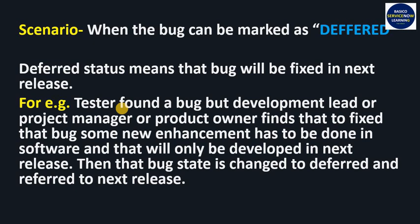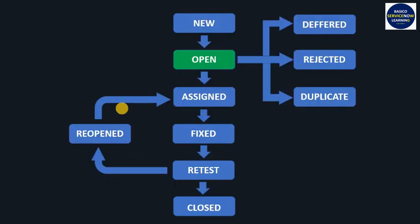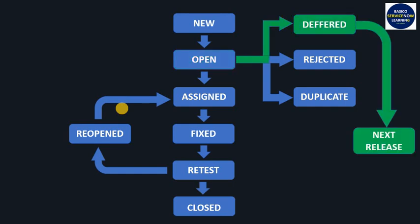Let's understand this in the bug lifecycle. If a particular bug is logged by the software tester and it is in the Open state, then the development lead, product owner, or project manager will analyze it. If they find this bug will not be fixed in this release, they will move the status to Deferred and it will be addressed in the next release.